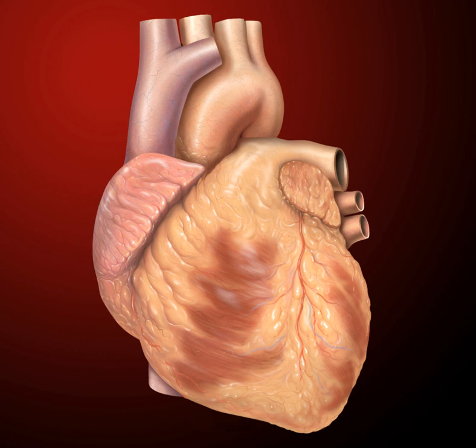The heart pumps blood with a rhythm determined by a group of pacemaking cells in the sinoatrial node. These generate a current that causes contraction of the heart, traveling through the atrioventricular node and along the conduction system of the heart.